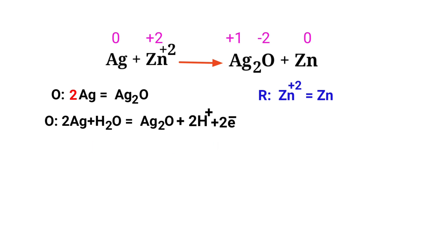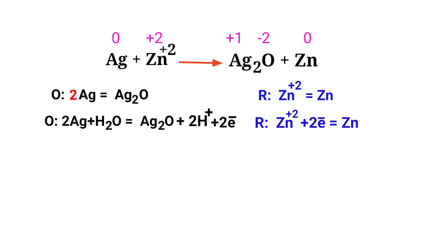Now equalize the addition of charges in the reduction half reaction. Make electron gain equivalent to the electron lost. Both sides are not equal; add electrons to make them equal to zero. The charges are now equaled in the reduction half reaction.